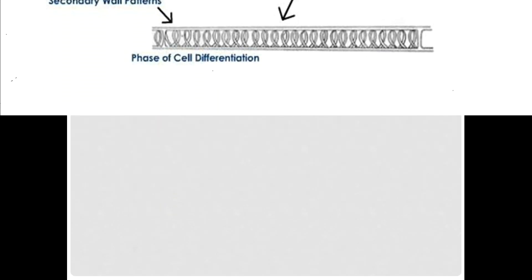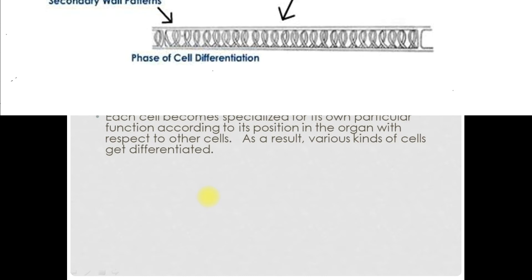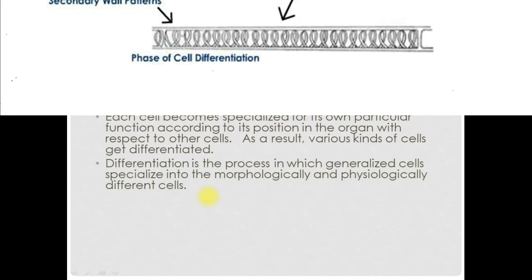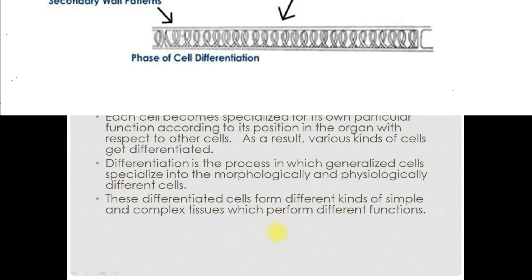The next phase is the phase of cell differentiation and specialization, or cell maturation. During this last phase, the enlarged cells eventually acquire a specific size and form according to their location and role following biochemical, physiological, and morphological changes. That is, the cells undergo specialization or transformation. Each cell becomes specialized for its own particular function according to its position in the organ with respect to other cells. As a result, various kinds of cells get differentiated. Differentiation is the process in which generalized cells specialize into morphologically and physiologically different cells. These differentiated cells form different kinds of simple and complex tissues which perform different functions. The greatest change occurs in the procambium strands which differentiate into vascular bundles.